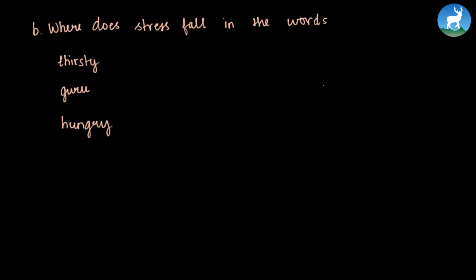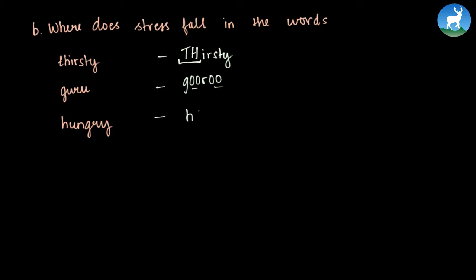The second question asks where stress falls in the words 'thirsty', 'guru', and 'hungry'. Stress means the syllable you focus on when pronouncing a word. In 'thirsty', the stress falls on the TH part — thirsty. For 'guru', you feel the stress on the GU syllable. Similarly in 'hungry', the UNG sound carries the stress — hungry — so the UNG portion has more stress.